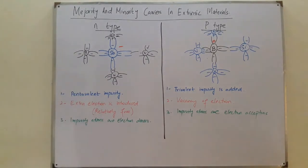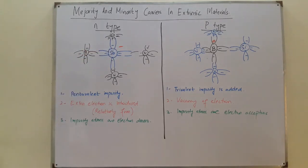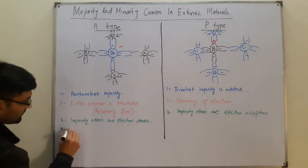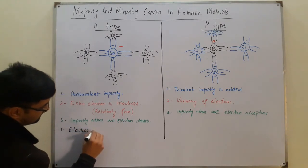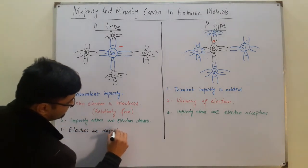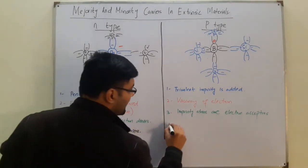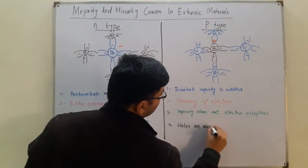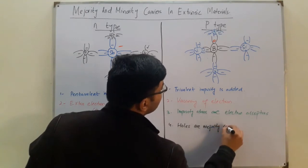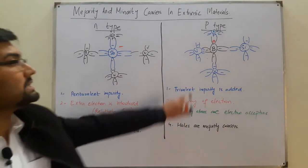Now, what about majority and minority carriers? In n-type, a large number of free electrons are produced, so electrons are the majority carriers. In p-type, holes are introduced, so holes are the majority carriers — there are a lot of holes and not many electrons. The current is mainly due to holes in p-type material and mainly due to electrons in n-type material.